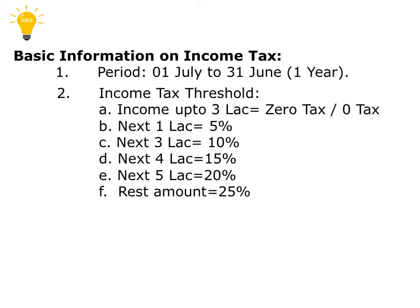For the next 1 lakh, 5% income tax will be calculated. Subsequently, if somebody has earned a higher salary, he or she needs to calculate 10% for the next 3 lakh. The next 4 lakh has a 15% tax, and the next 5 lakh will have a 20% tax. And if somebody earns more than that, the rest of the amount will have a 25% tax. This is the income tax threshold.